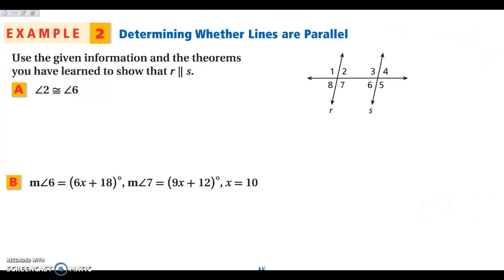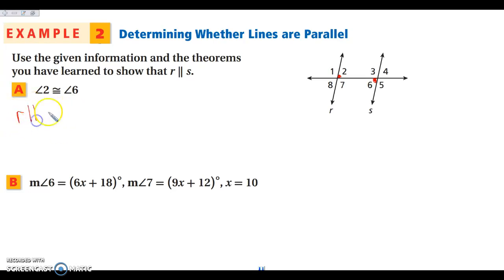Let's do a little more work with these. I'm told that angles two and six are congruent. Angles two and six are alternate interior angles. So if my alternate interior angles are congruent, then I know my lines are parallel. I can say that line R is parallel to line S by the alternate interior angles converse.